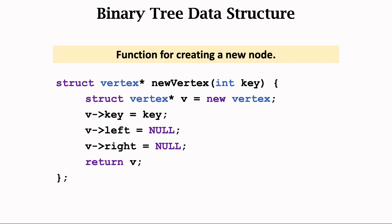This function creates a new vertex and initializes it. The input of the function is the key. This line of code creates a new vertex, v. Its key is the input of the function.